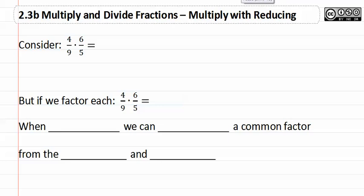Let's consider this first problem. If I have four ninths times six fifths and I use the rules we learned in the last video, where I just simply multiply the numerators and the denominators, I get twenty-four over forty-five.